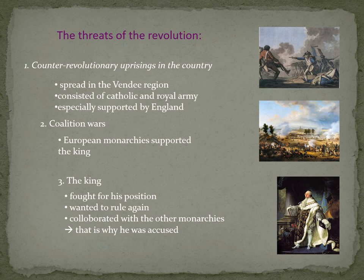From the 2nd to 5th of September 1792, masses killed inmates of the overcrowded Parisian prisons — about 1,000 to 1,500 were killed — because the masses were afraid of an uprising against the revolution started by the prisoners.